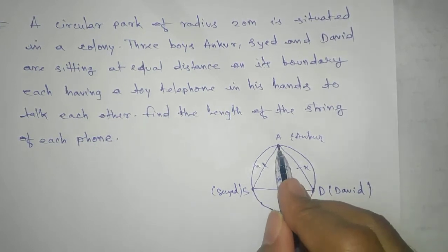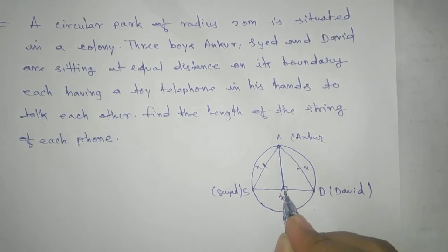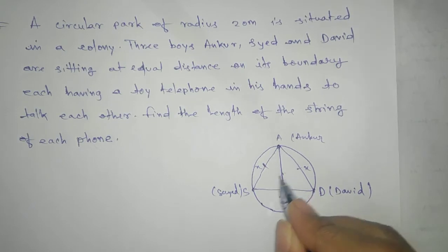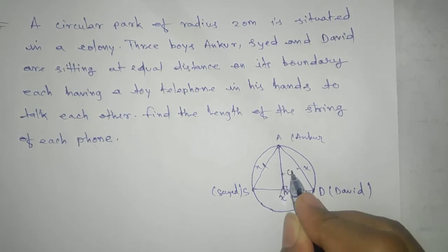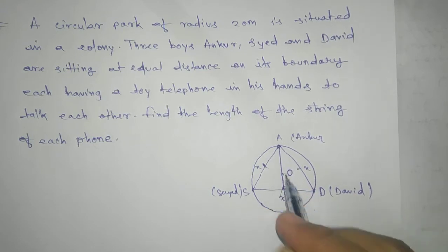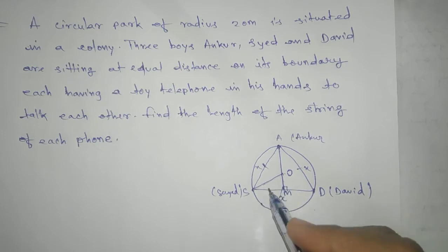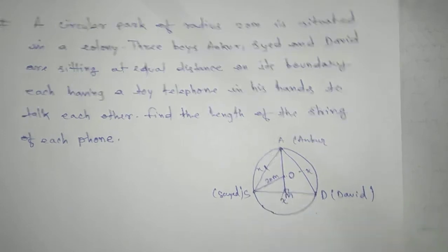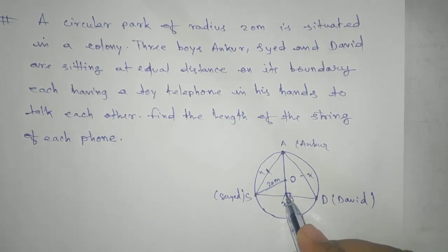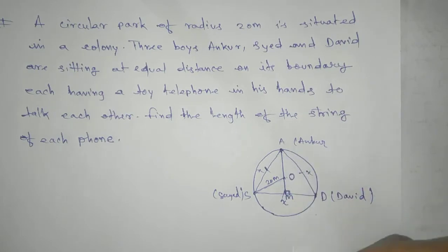We draw a perpendicular line from A and give it the name M. This is AM. It passes through the center. If we join OS, this is your radius, that is 20 meters. Now our target is to find AM.